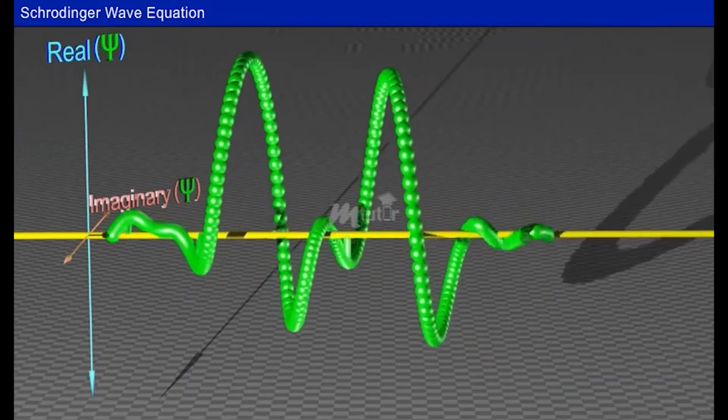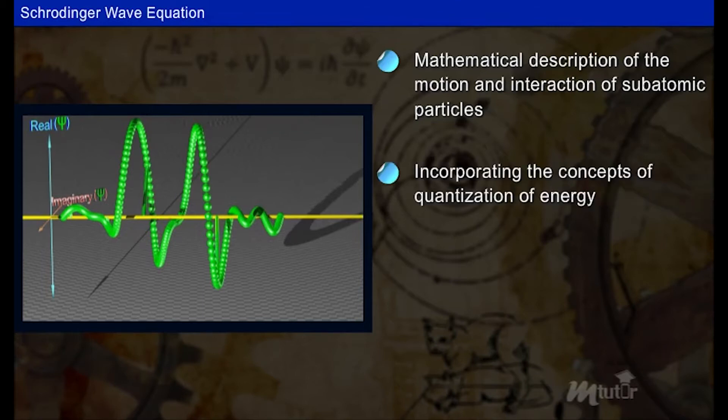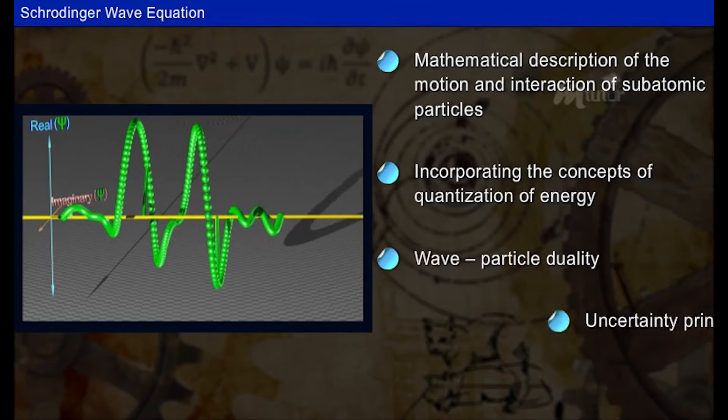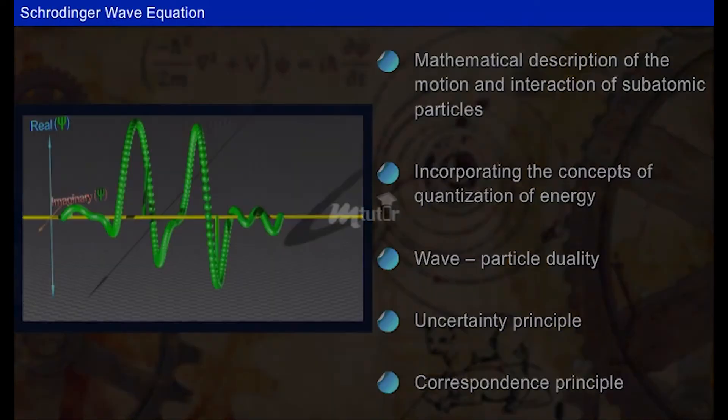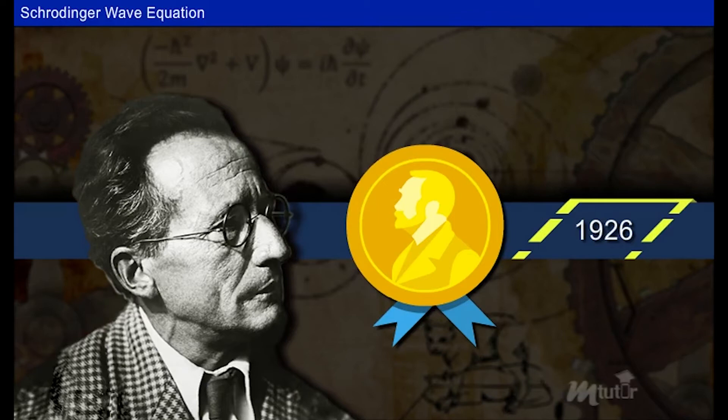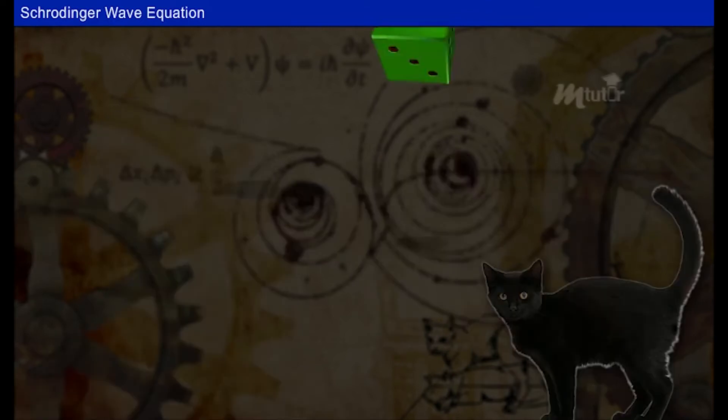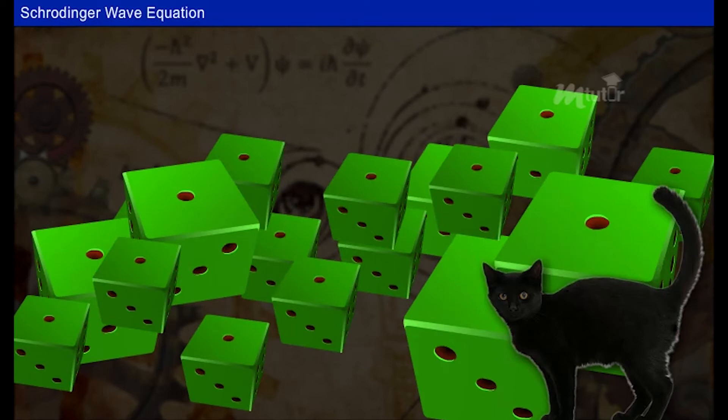We have seen in previous lessons, quantum mechanics is the branch that deals with the mathematical description of the motion and interaction of subatomic particles, incorporating the concepts of quantization of energy, wave-particle duality, the uncertainty principle, and the correspondence principle. Schrödinger wave equation is used to describe the behavior of a particle at the atomic level. Schrödinger was awarded the Nobel Prize in 1926 for developing the Schrödinger equation, the solution of which gives wave functions, out of which only certain solutions are permissible. The probability of every possible observation is determined by the wave function, but prior to the observation, the wave function changes and evolves in a completely deterministic manner.